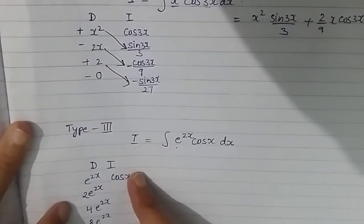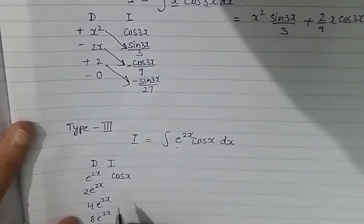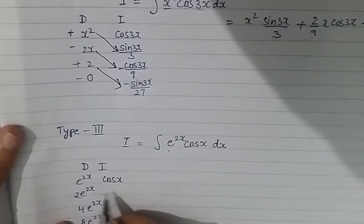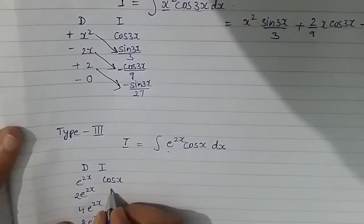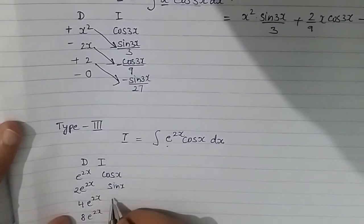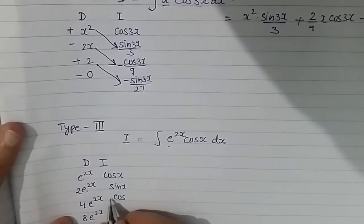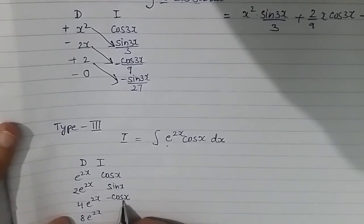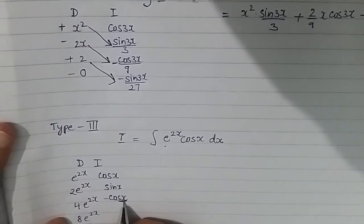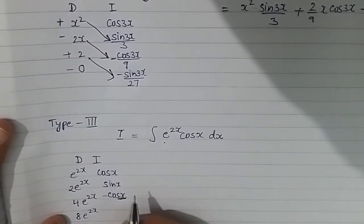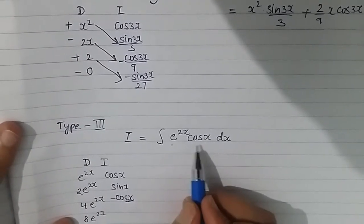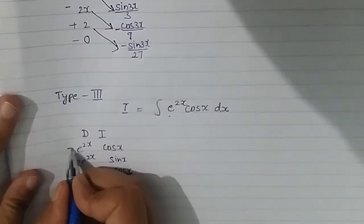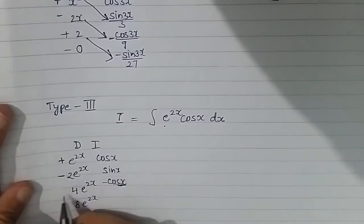Since the D-column never reaches 0, I need to choose a stopping point. On the I-column: integral of cos x is sin x, integral of sin x is −cos x. This is my critical stopping point, because −cos x brings back the same form as the original integrand e^(2x) cos x.